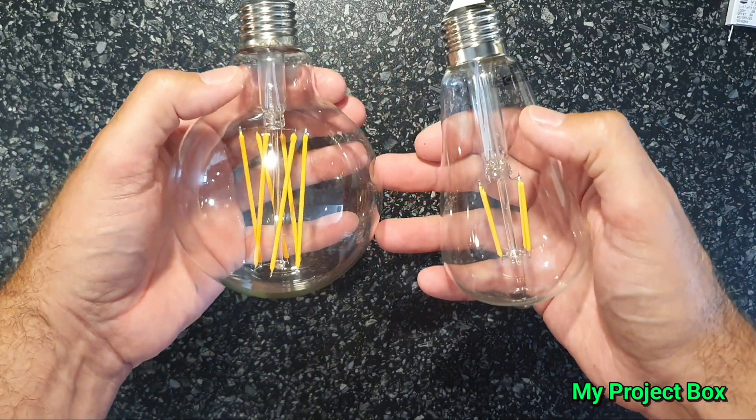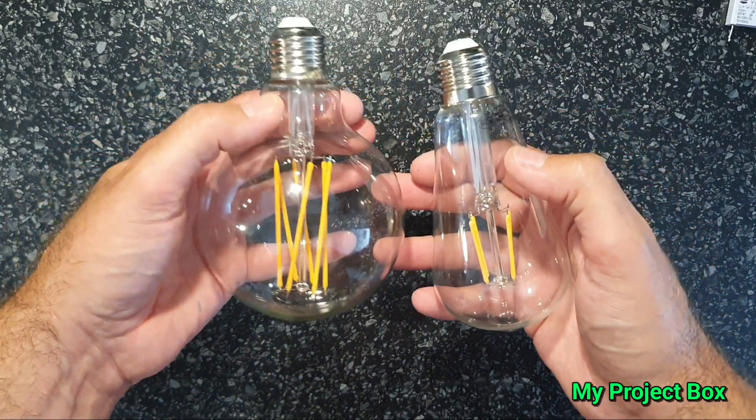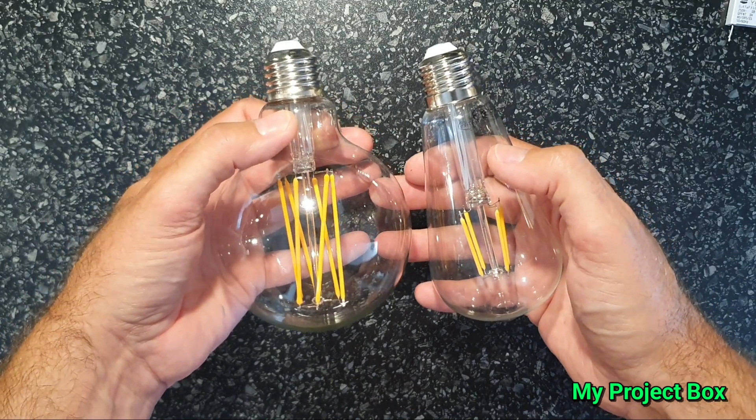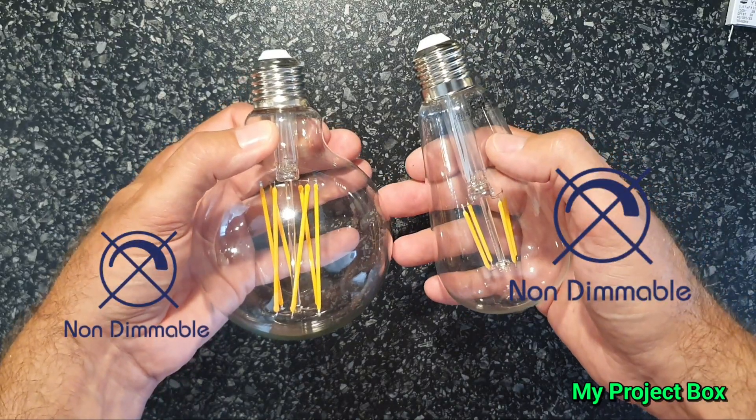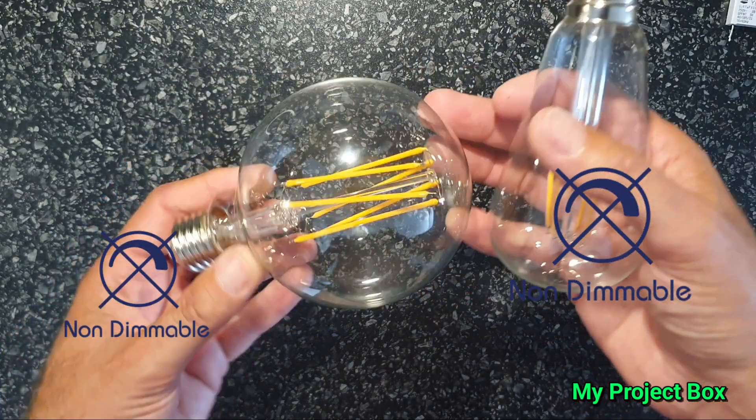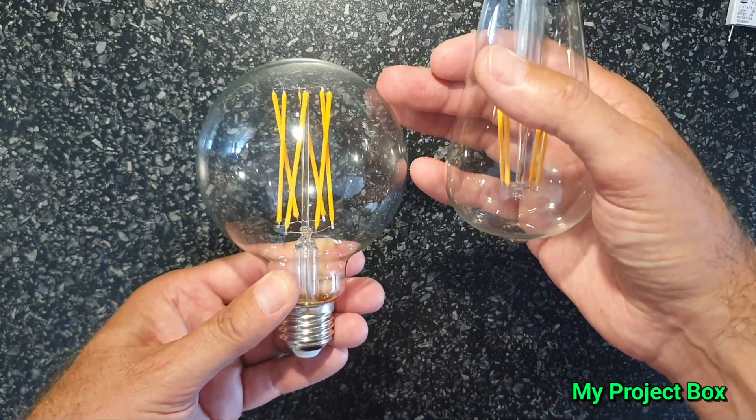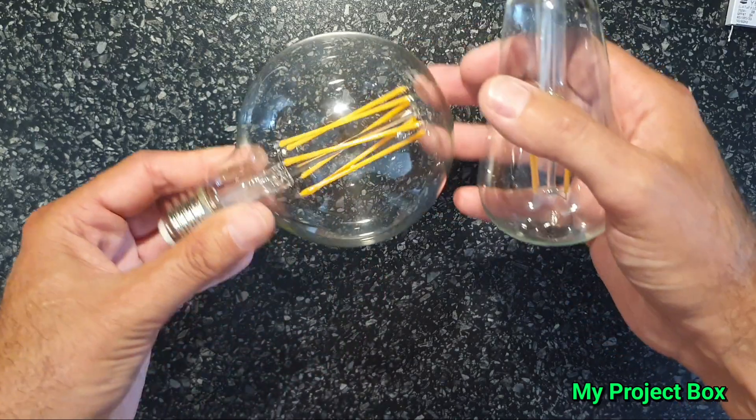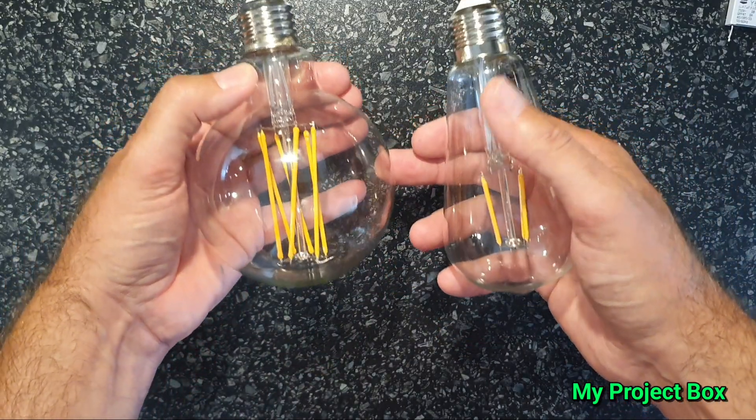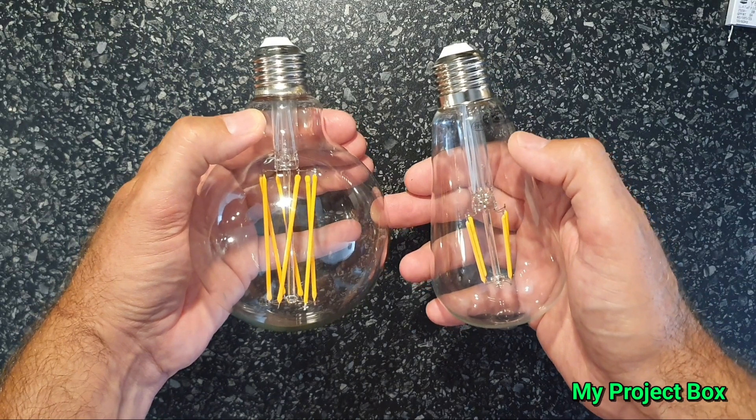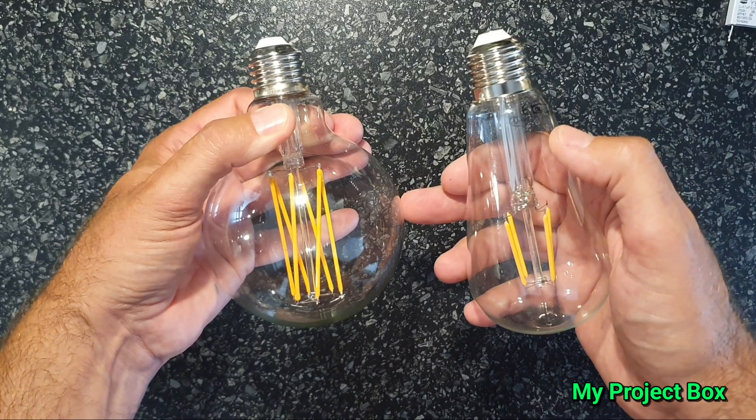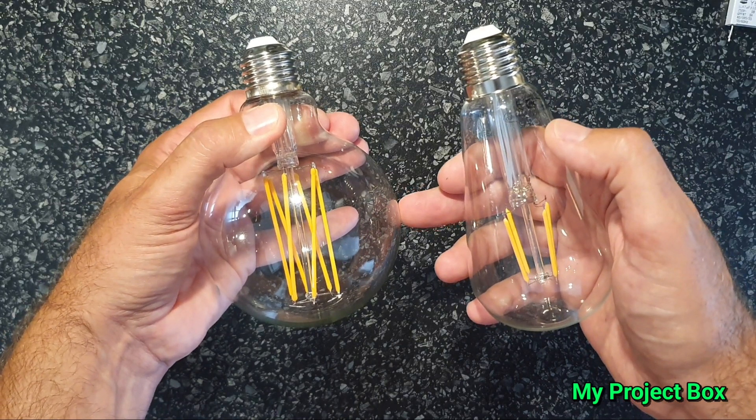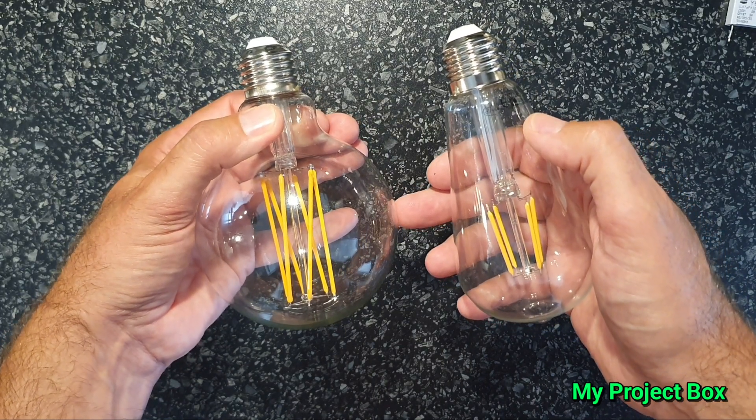Now I know they're not dimmable because I've tried them on a dimmer made specifically for LED light bulbs and they don't work. It says it on the packaging as well. They're not dimmable, but because they're rather expensive it would be nice to run them at a slightly lower intensity just to extend their life because I've had these fail on me before and they're not that cheap, so it'd be nice for them to last a little bit longer.